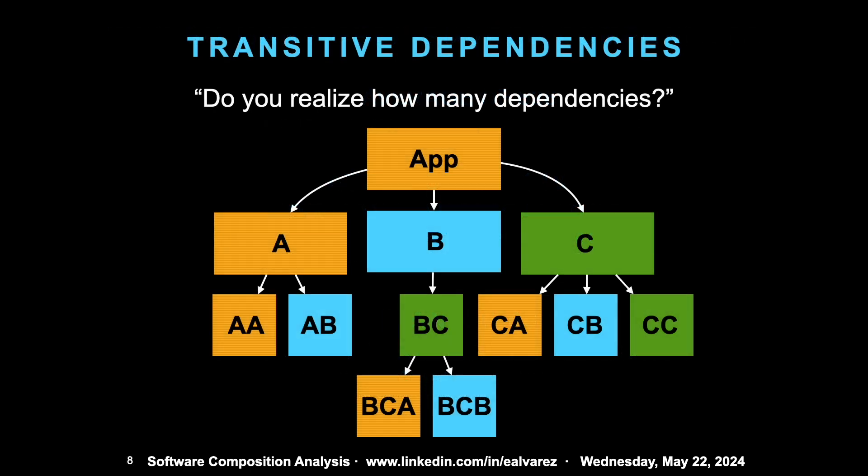This is what's called transitive dependencies. When the initial application references, in this case, three components, when you count the total it's much more than three because these dependencies are recursively being added — they're called transitive dependencies.